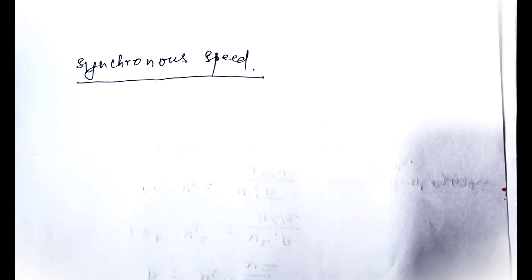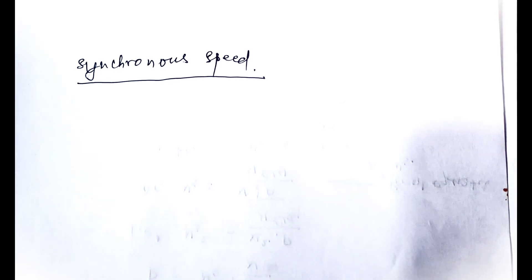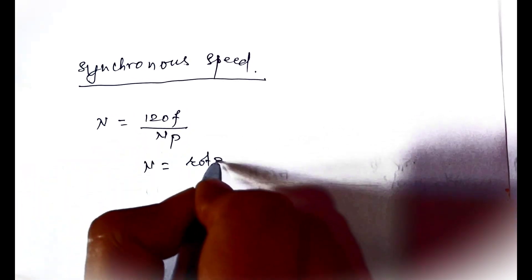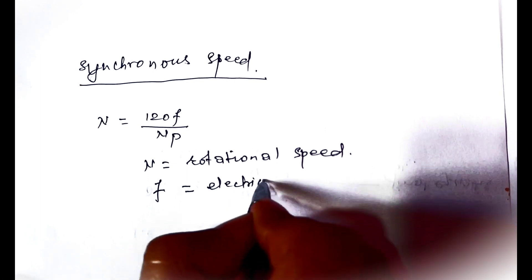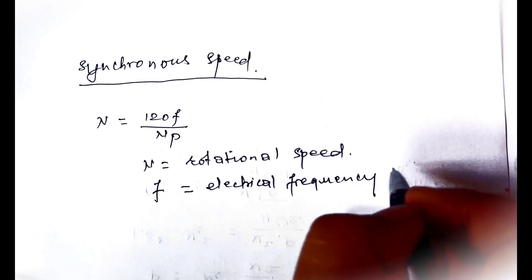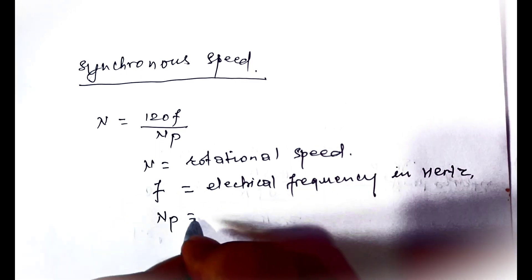Now let's talk about synchronous speed. If the turbine is directly connected to a generator, the turbine speed must be the synchronous speed. The following equation must be satisfied: N equals 120·f / Np, where N equals rotational speed, f equals electrical frequency in hertz, and Np equals number of generator poles.